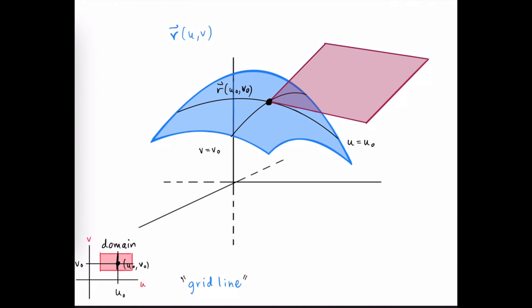A plane tangent to our surface at this point will contain all tangent vectors at that point. Let's rephrase: c₁ is a grid curve, and we have a vector tangent to this curve represented by the partial derivative of the surface function with respect to u, since this curve came about by holding v constant. Similarly, a vector tangent to the second grid curve c₂ can be expressed as the partial derivative with respect to v, since u is held constant to obtain that grid curve.